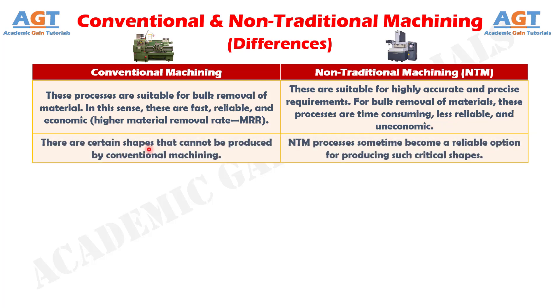Difference No. 9: There are certain shapes that cannot be produced by conventional machining, whereas non-traditional machining processes sometimes become a reliable option for producing such critical shapes.